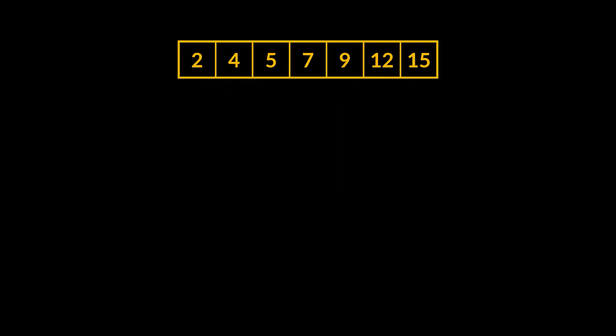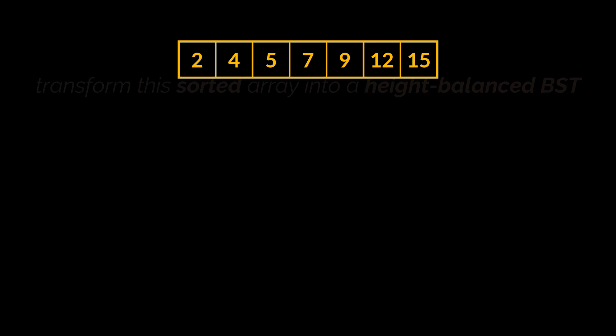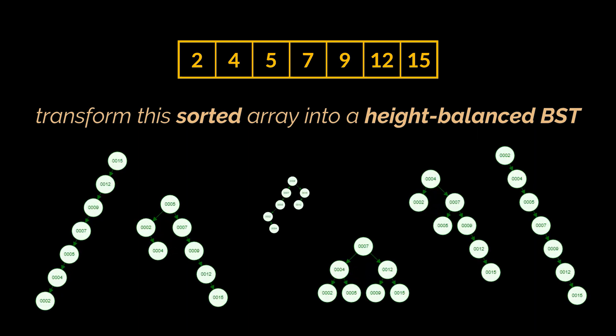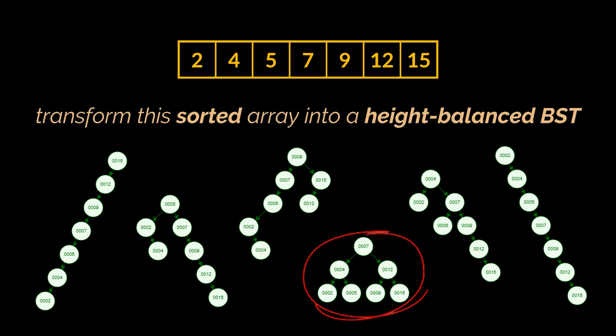One of the problems you might be given during an interview may start with a sorted array. What you're asked to do is transform this sorted array into a height-balanced binary search tree. If the height-balanced condition wasn't in the question, all the trees in front of you would be valid answers. However, adding this condition implies that only one specific tree is a valid solution for the given array.